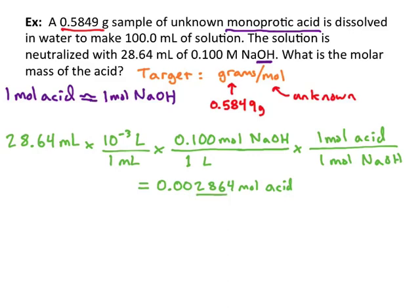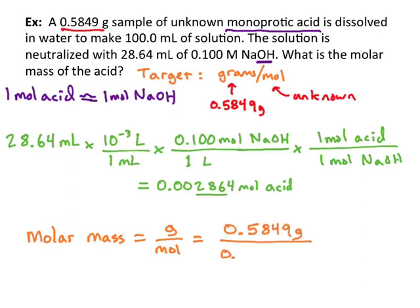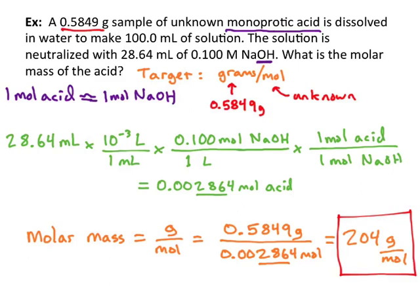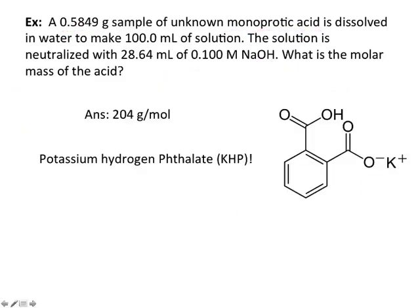We want molar mass, which is grams per mole. We already have the number of grams in the sample, and we just found the number of moles by titration. Dividing grams by moles gives 204 grams per mole — and 204 grams per mole happens to be the molar mass of potassium hydrogen phthalate. Here's the structure drawn in a bond line diagram. That's your answer.